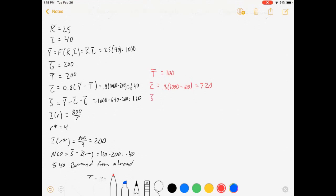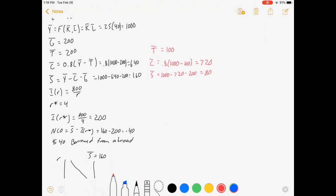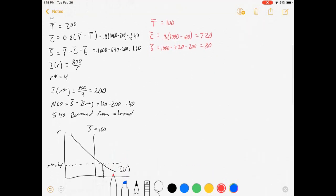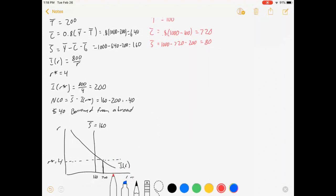Which means savings also changes. 1,000 minus 720 minus 200 is equal to 80. Investment doesn't change. We haven't changed their behavior. We haven't changed the world interest rate. But we did change net capital flows. It's 80 minus 200, so minus 120.